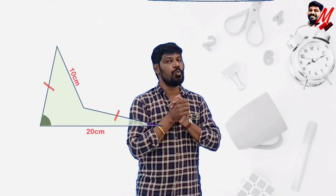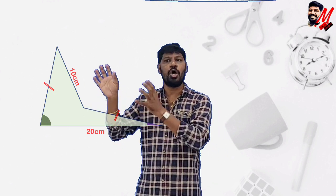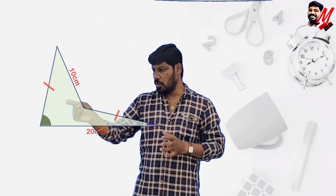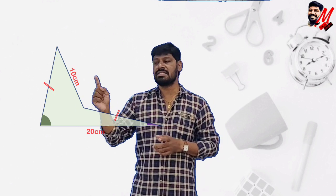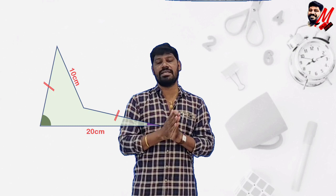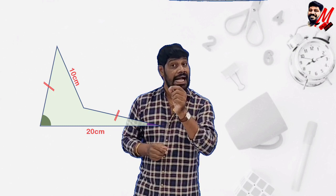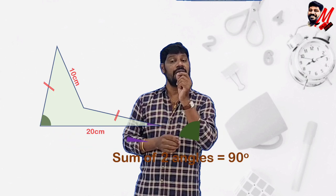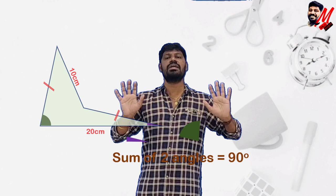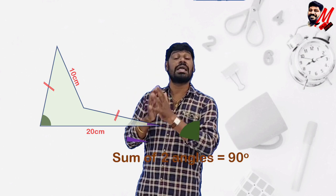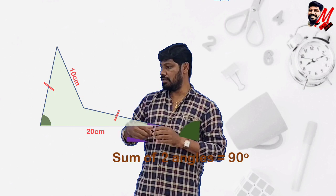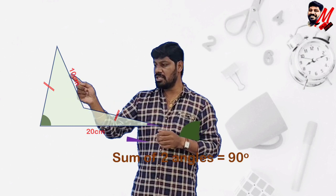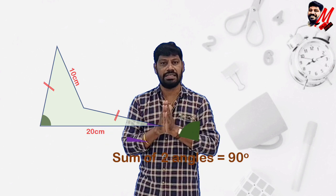Without wasting time, let me introduce the question. A concave quadrilateral was given without any alphabetic labeling, in which two slant sides are equal in length, the smaller base is 10 cm, the longer base is 20 cm, and the sum of the two base angles equals 90 degrees. That is the only information provided, and we need to calculate the area of this concave quadrilateral.